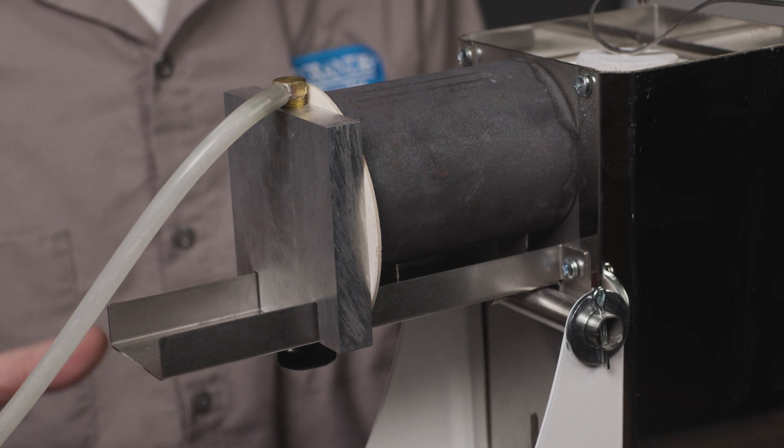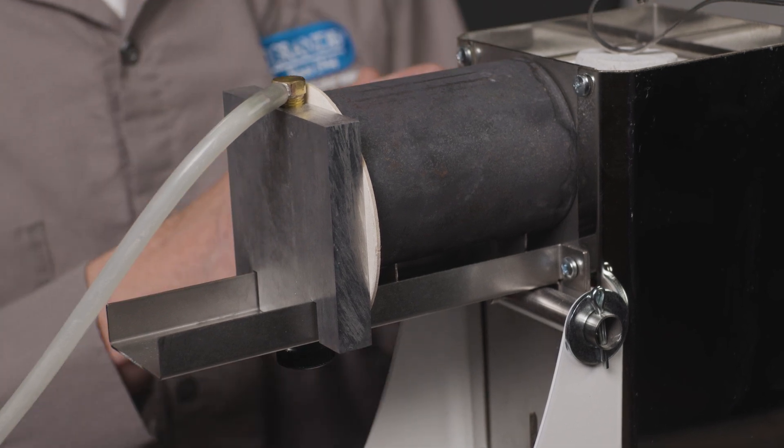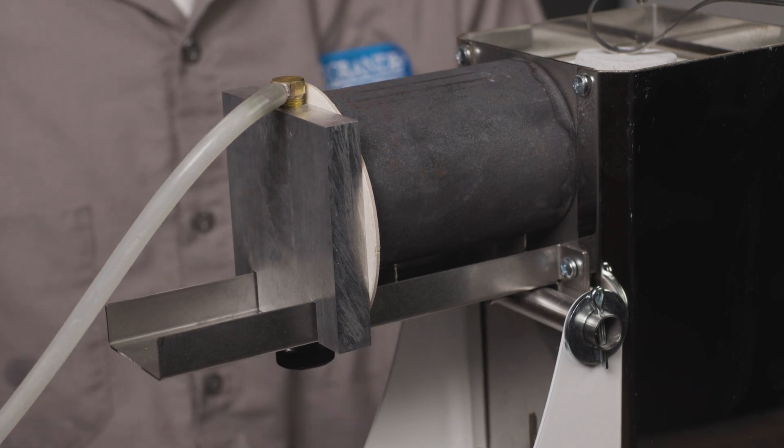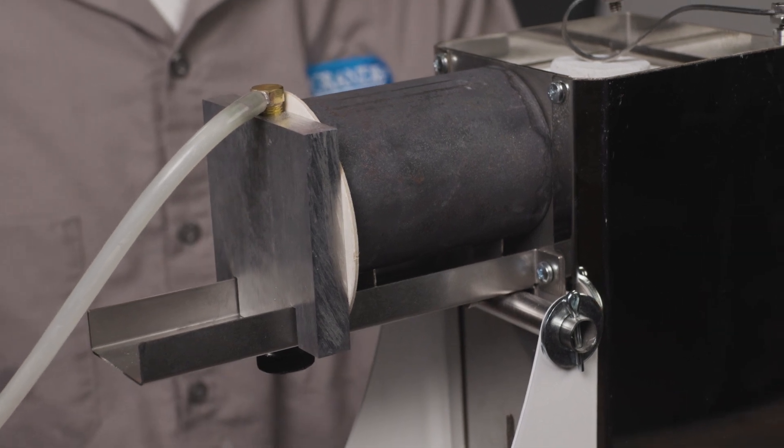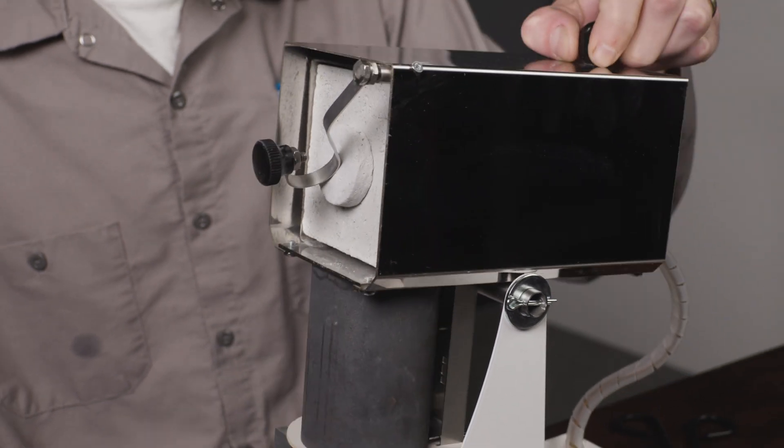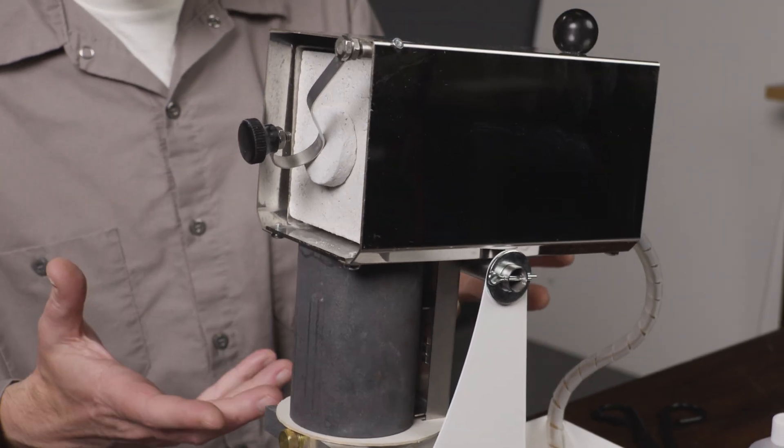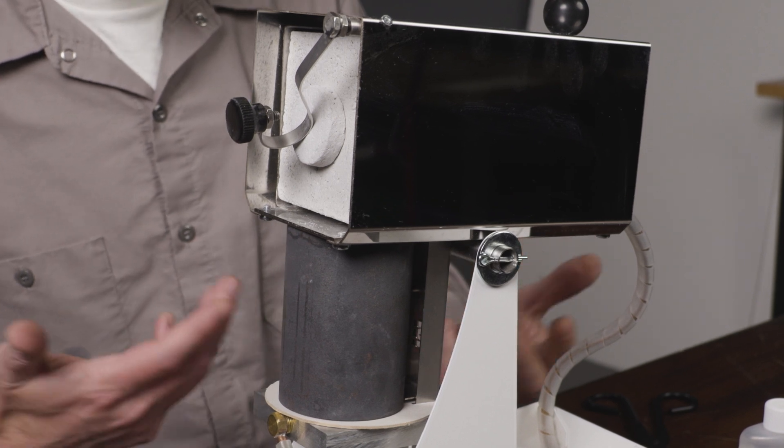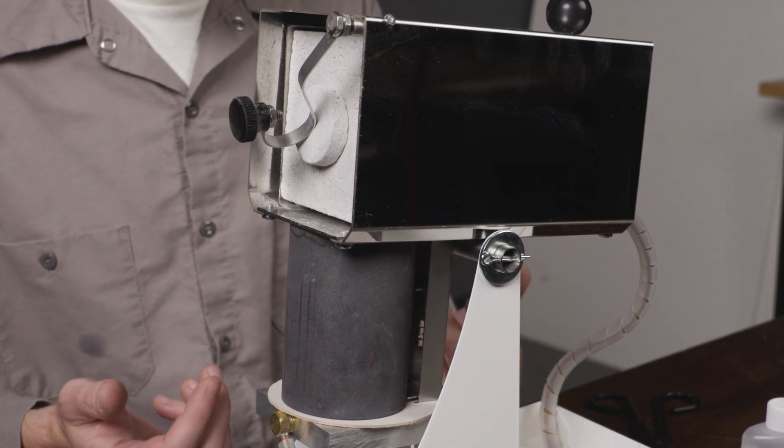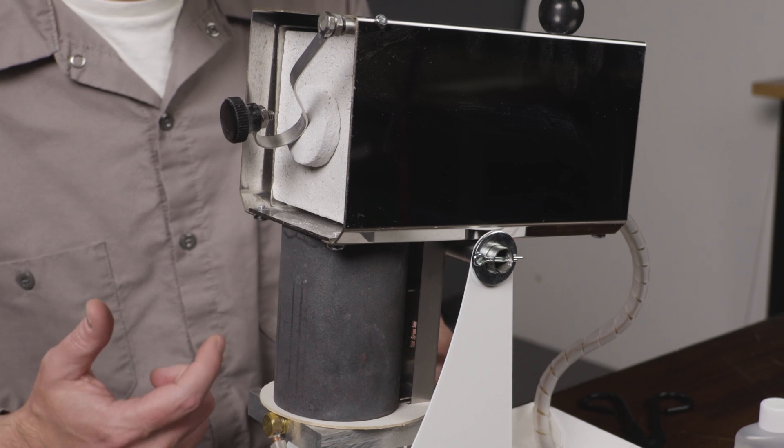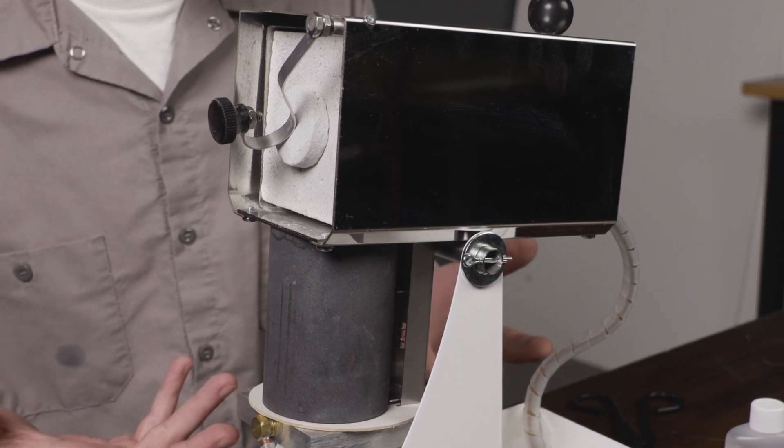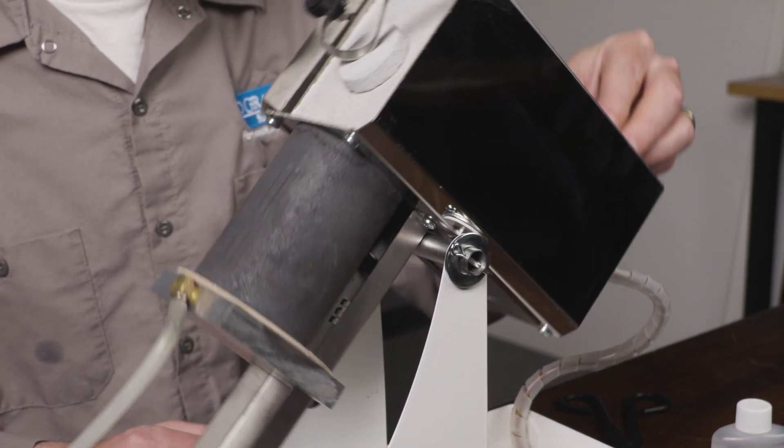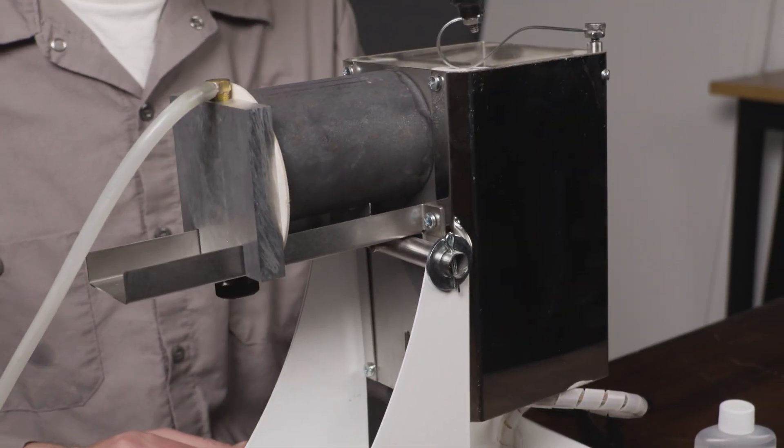So once all of that is assembled, our metal is melted, our flask is ready, vacuum is on, we can grab the knob on the side of the unit and just tip it. That will pour the metal into the flask. We'll wait maybe 30 to 40 seconds depending on how much metal is in there. We just want to make sure that it's completely solidified before we tip this back and remove our flask.